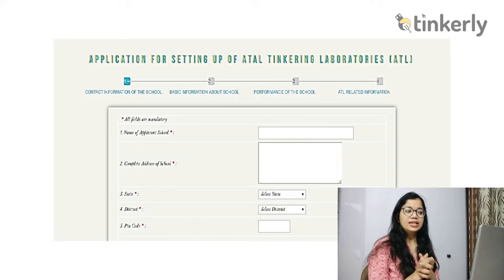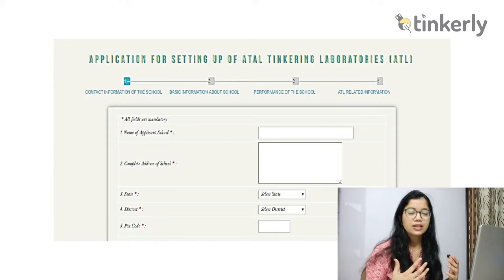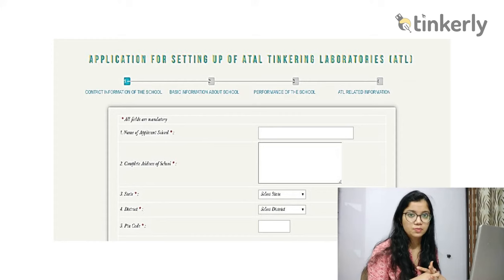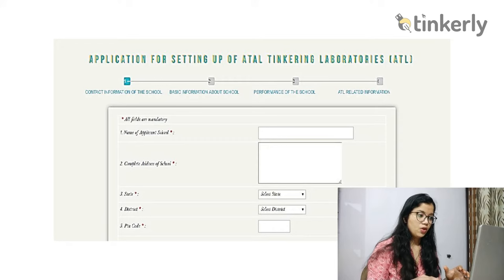While filling the application form, make sure all information you provide is correct. All sections are mandatory — you must fill every field and answer every question. In the first part — contact information of school — a form box opens and the first thing asked is the full name of your school.